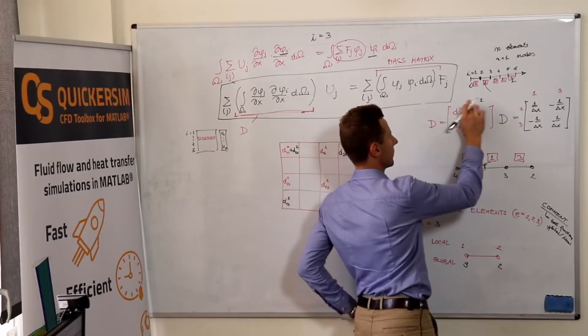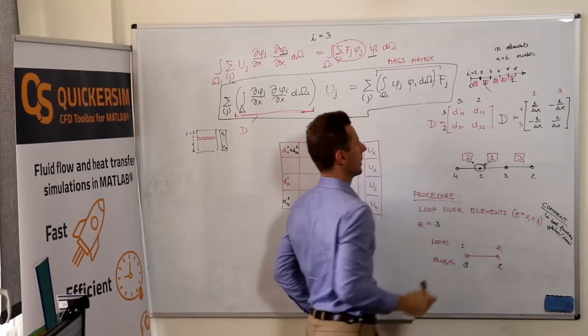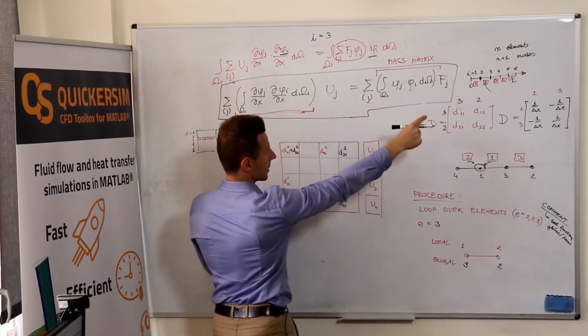So, three-two, three-two. So, three-three is plus D one-one of the third element.